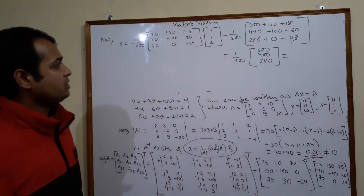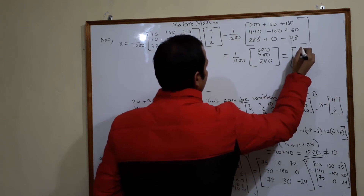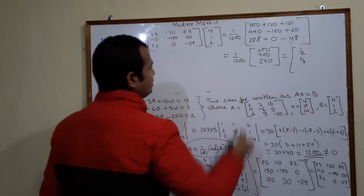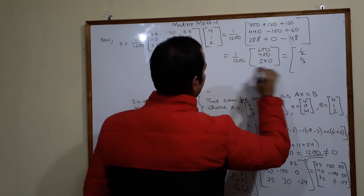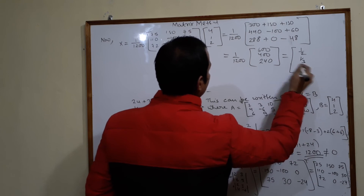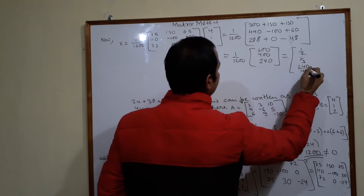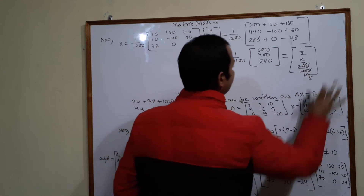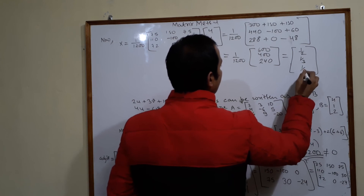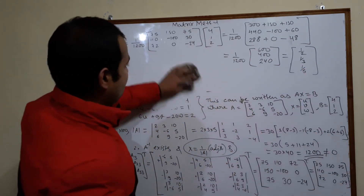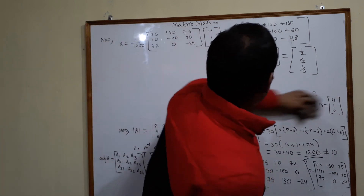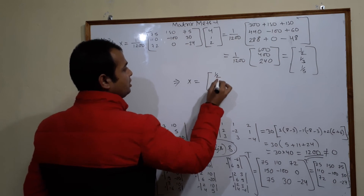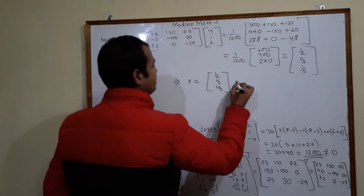Now divide each element by 1200. So u = 600/1200 = 1/2, v = 400/1200 = 1/3, w = 240/1200 = 1/5. So the vector X = [u, v, w] = [1/2, 1/3, 1/5].